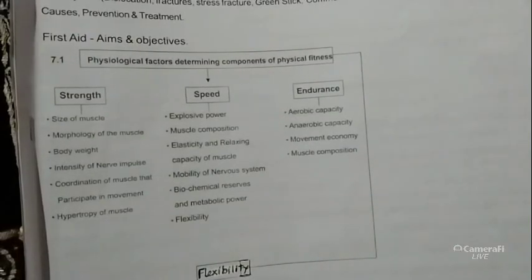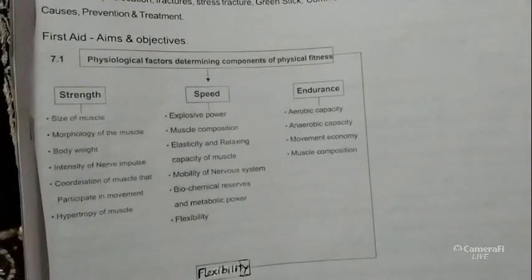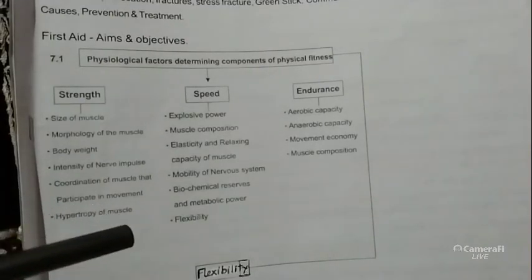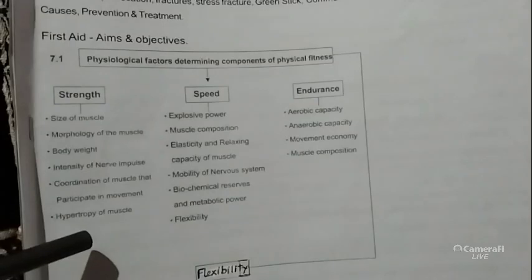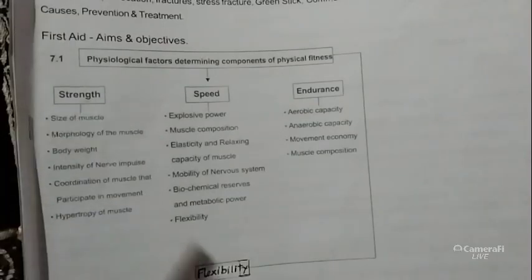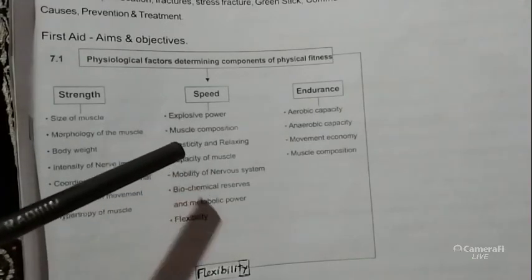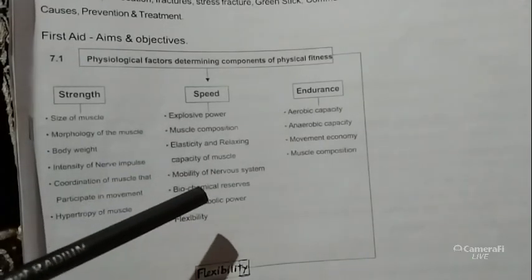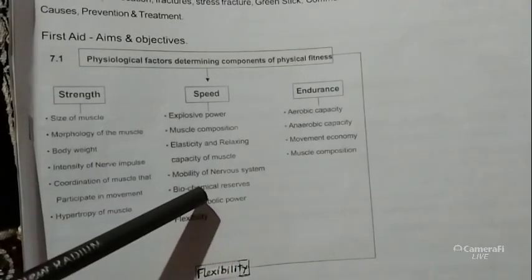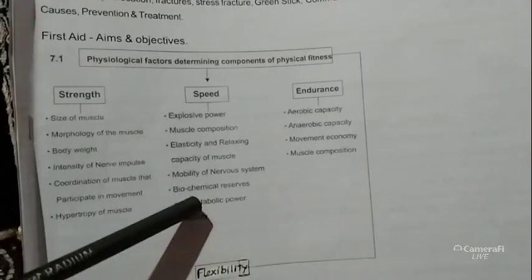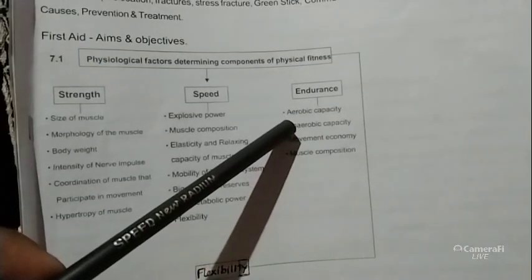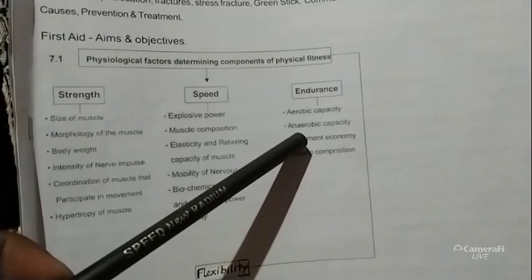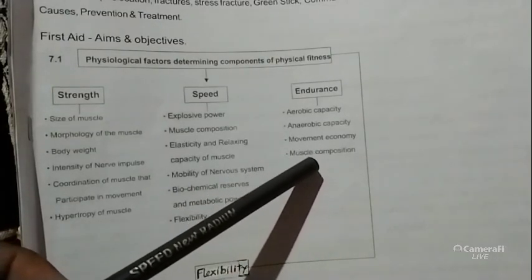For strength, the factors include size of muscle, muscle morphology, body weight, intensity of nerve impulse, coordination of muscles that participate in movement, and hypertrophy of muscle. For speed: explosive power, muscle composition, elasticity, relaxation capacity of muscle, mobility of the nervous system, biochemical reserves, and metabolic power. For endurance: aerobic capacity, anaerobic capacity, movement economy, and muscle composition.